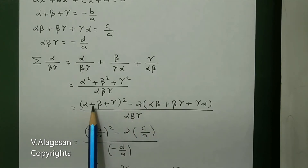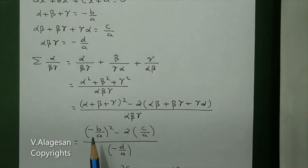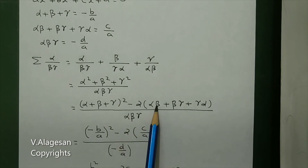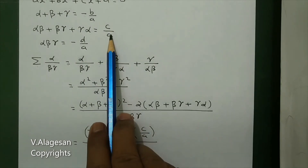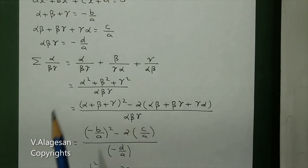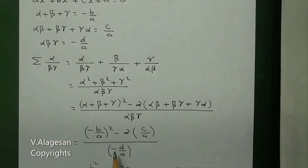Substituting values: alpha plus beta plus gamma is minus b by a, so we get minus b by a whole square. Minus 2 times alpha beta plus beta gamma plus gamma alpha is c by a, so minus 2 into c by a. And alpha beta gamma is minus d by a.